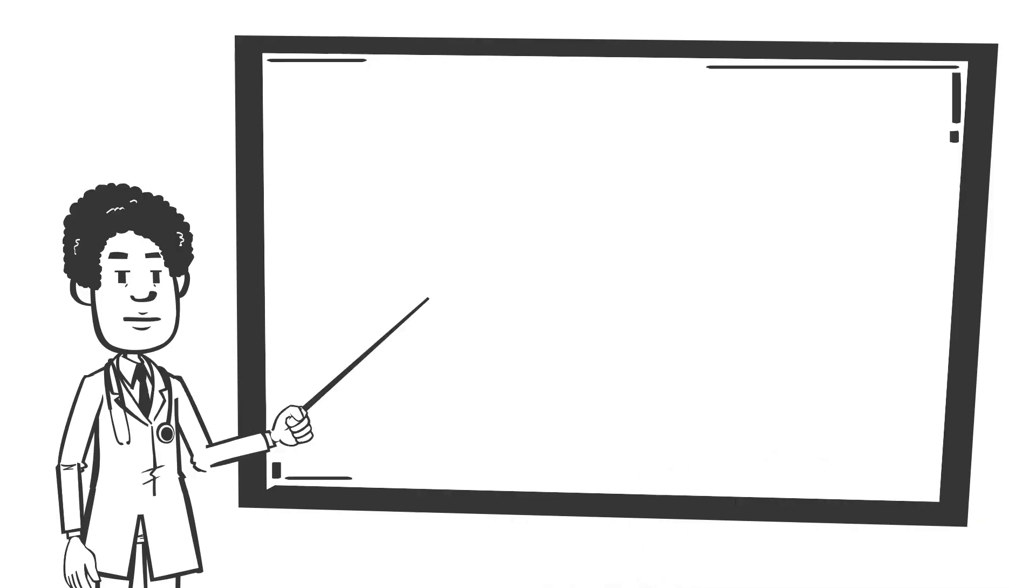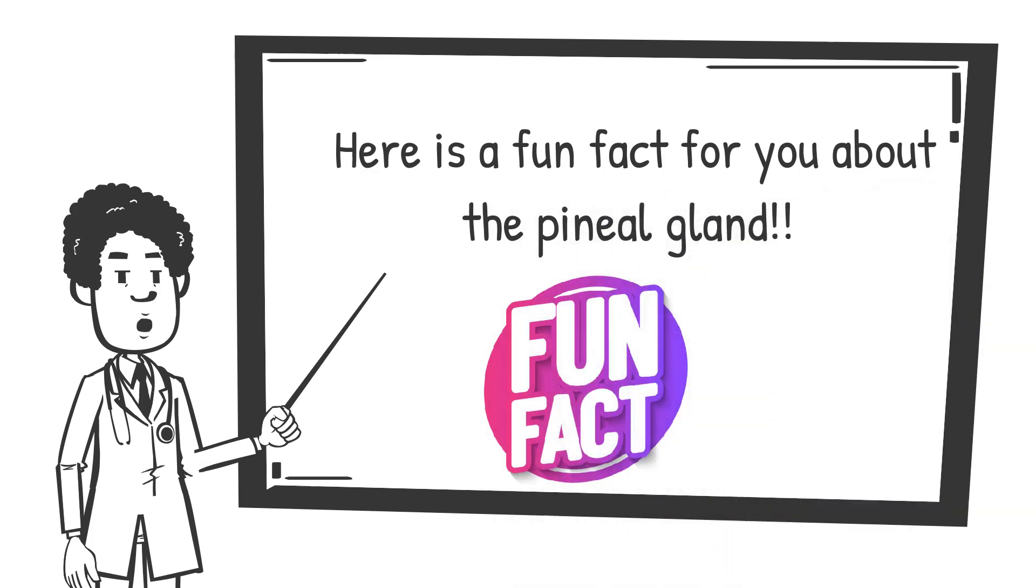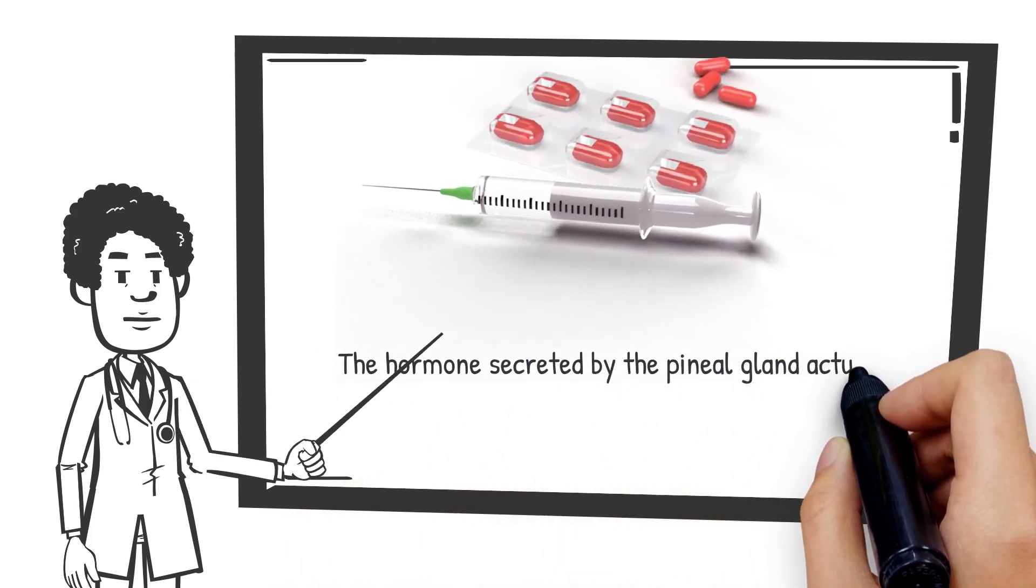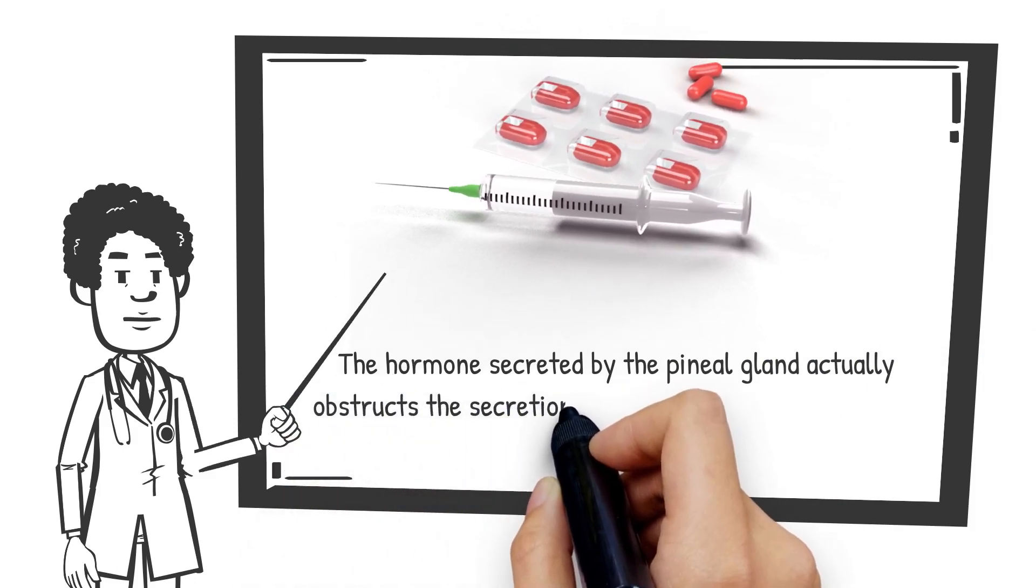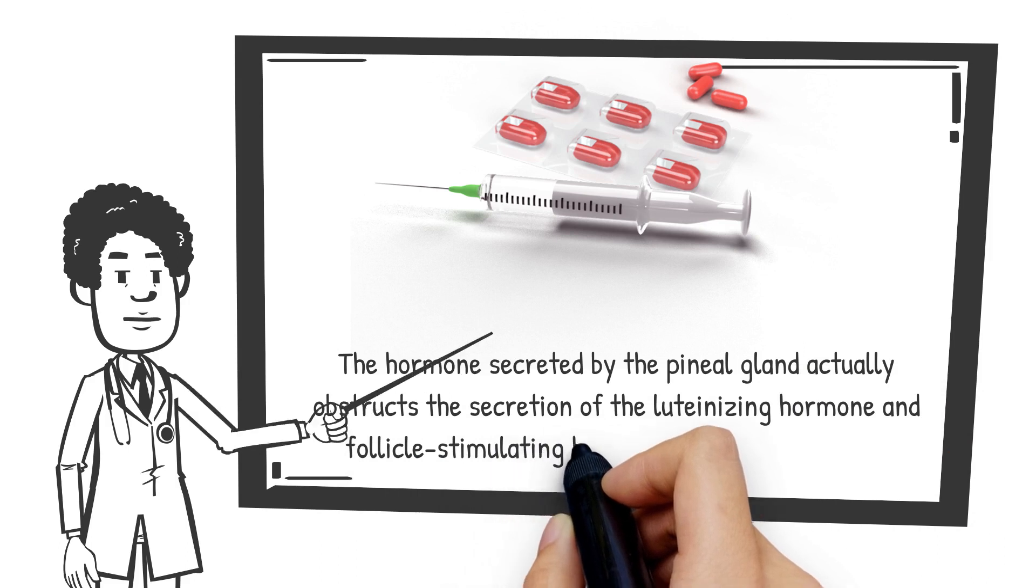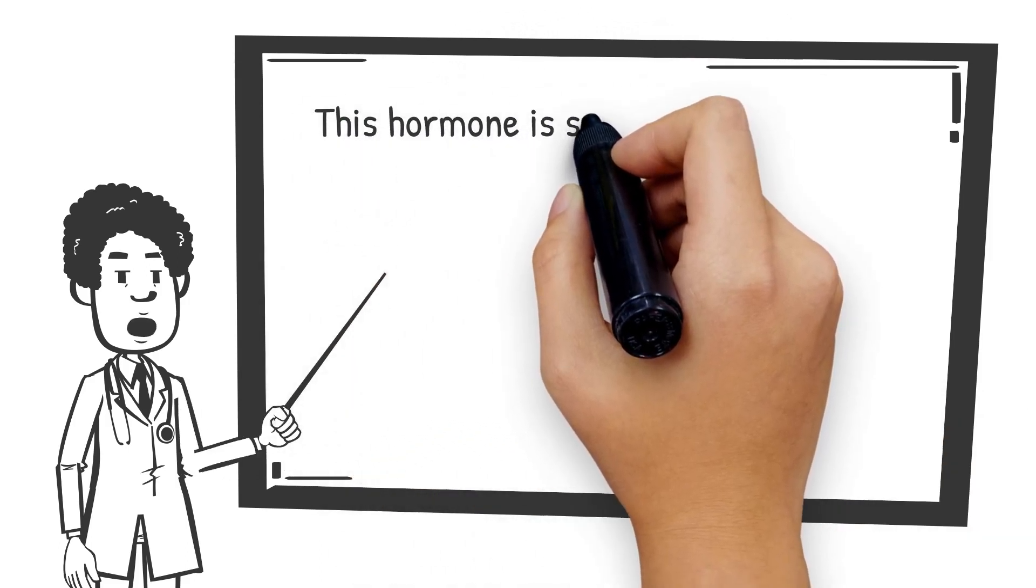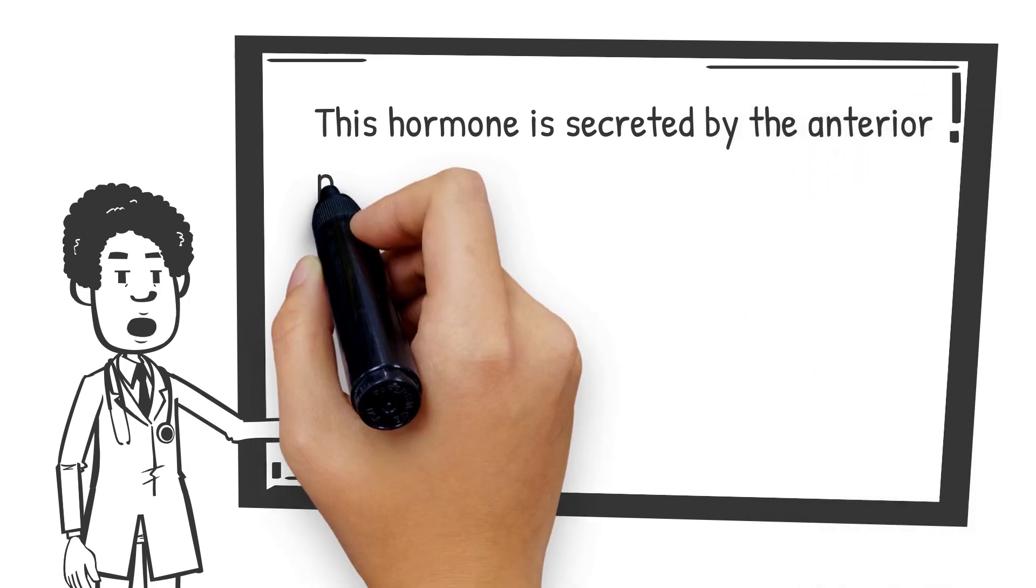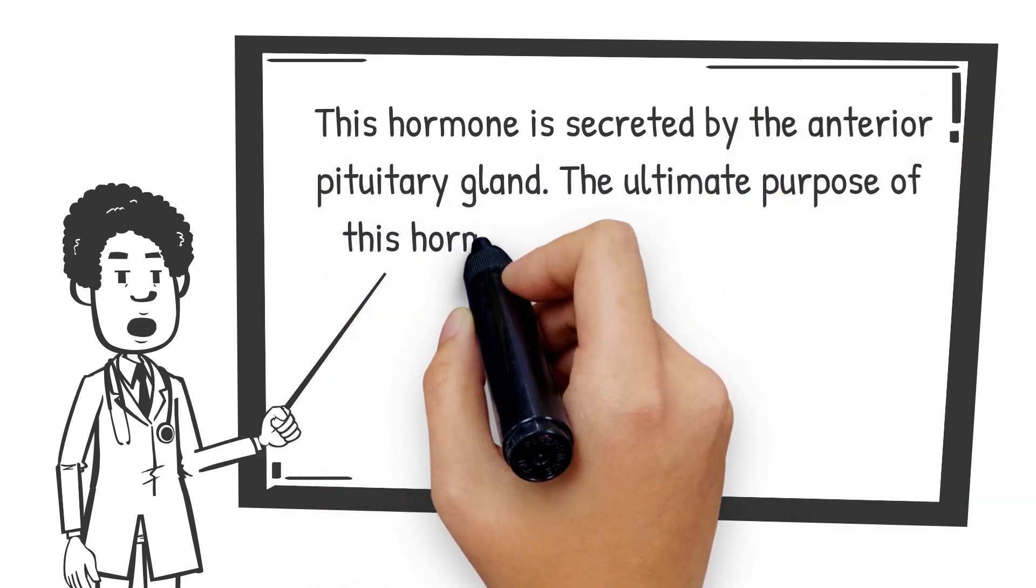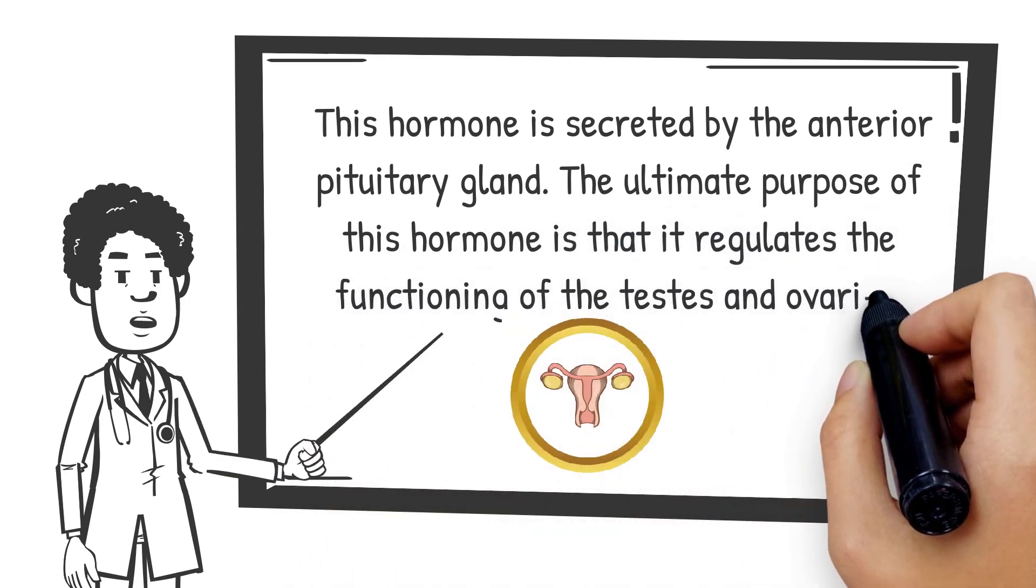Nearing the end of today's video, here is a fun fact for you about the pineal gland. The hormone secreted by the pineal gland actually obstructs the secretion of the luteinizing hormone and follicle-stimulating hormone, the gonadotropins. This hormone is secreted by the anterior pituitary gland. The ultimate purpose of this hormone is that it regulates the functioning of the testes and ovaries.